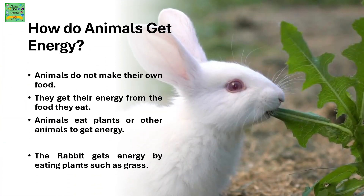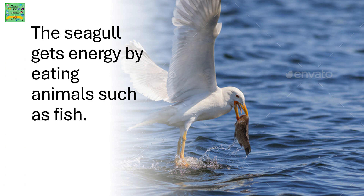How do animals get energy? Animals do not make their own food. They get their energy from the food they eat. Animals eat plants or other animals to get energy. For example, the rabbit gets energy by eating plants such as grass, and the seagull gets energy by eating animals such as fish.